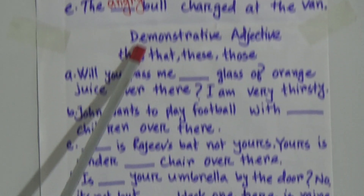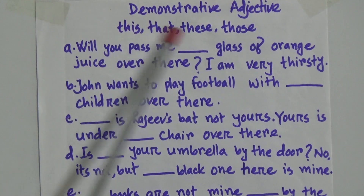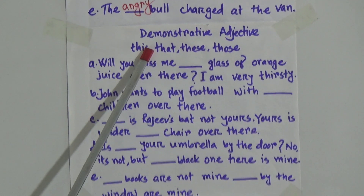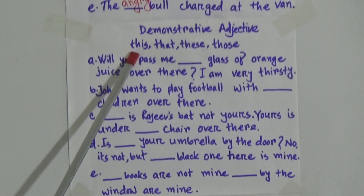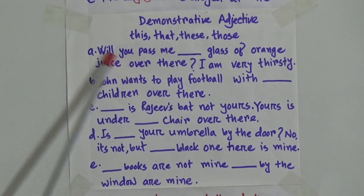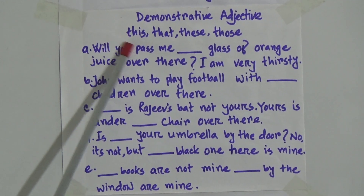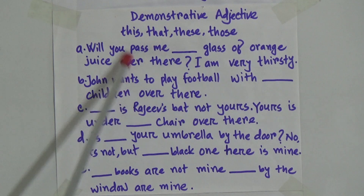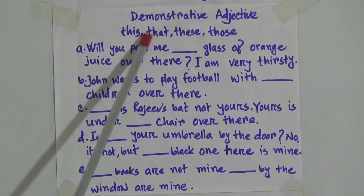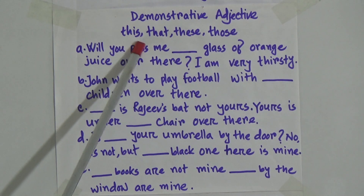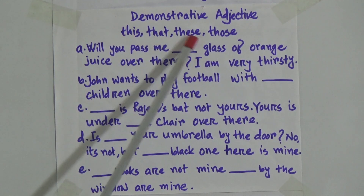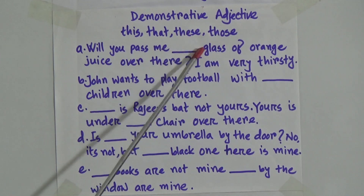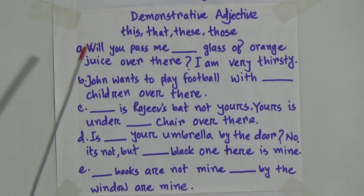Now we will discuss about demonstrative adjectives. In your previous class, you already learnt about demonstrative adjectives. Although it is your revision class, I will not go deep into that topic — I will just practice it for your better understanding. Here are also some options given by which you have to fill up these questions. This and that are used for something that is singular and nearby. These and those are used for something plural or that is far away from your place.